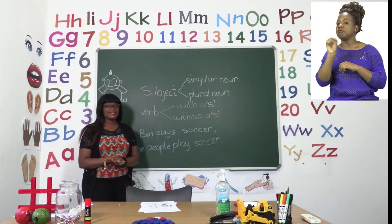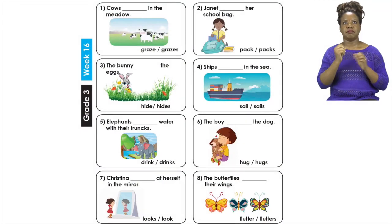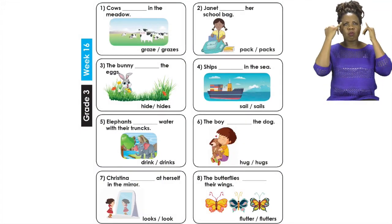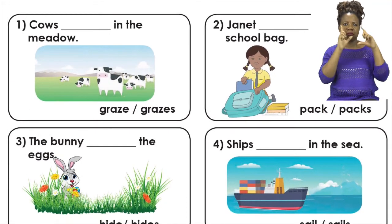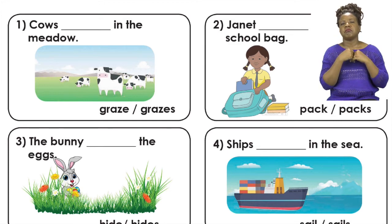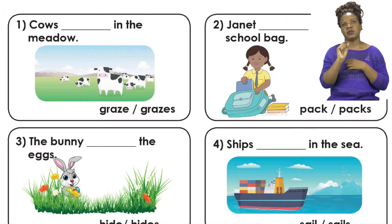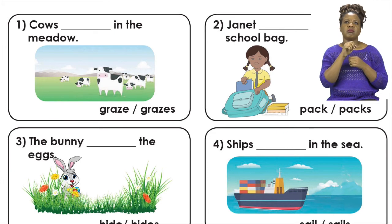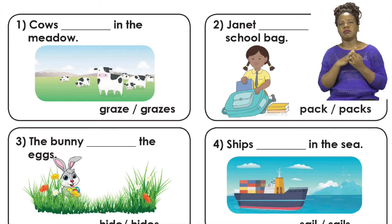So now that I've explained this to you, let's try and do number one and number two together. Number one says cows dash in the meadow. It's going to be our job to look at each picture and choose the correct form of verb that matches the subject. So we have our options. It's either we use graze or grazes. Now our verb there is graze or grazes. We have to first look at the subject, which is the noun. The noun we have been given is the word cows.